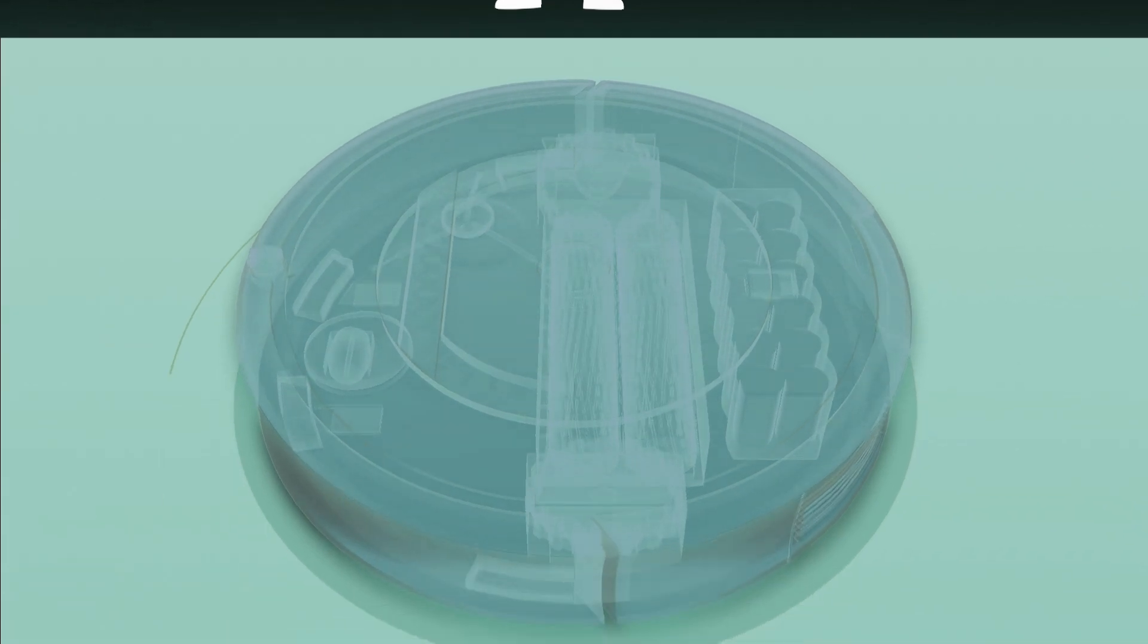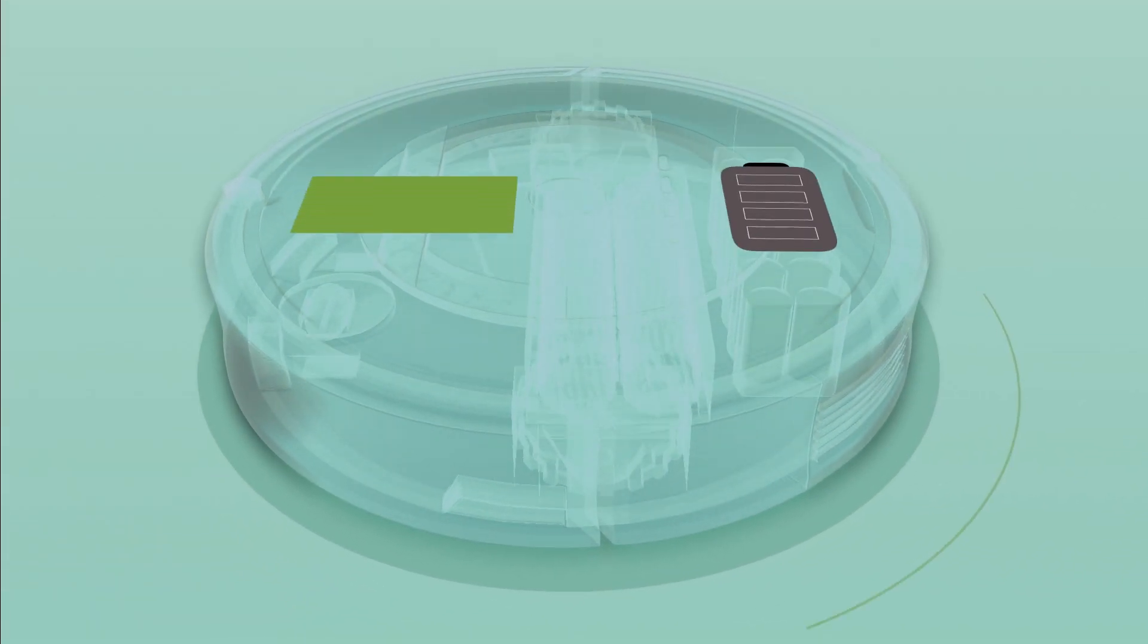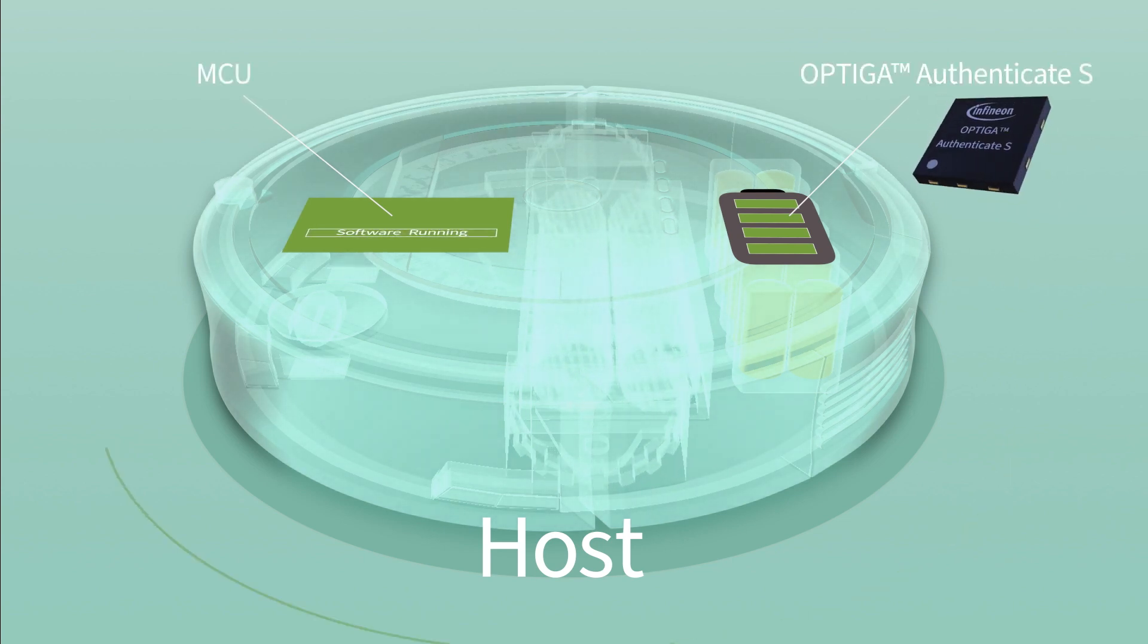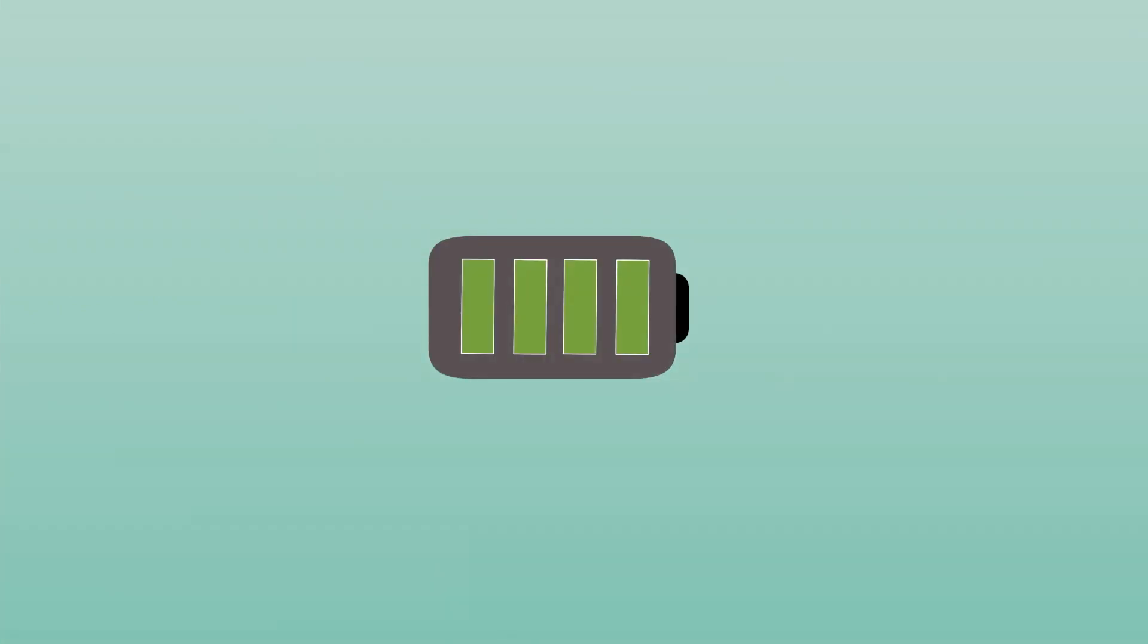In our example, the floor care robot is the host. It features a microcontroller running the application, supported by the host interface library. The host communicates with the client. Here, the client is the battery, secured with the unique Optiga Authenticate S chip, which provides the unique ID.